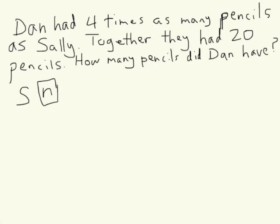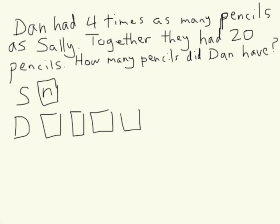Dan had four times as many pencils as Sally, so for Dan, he has four times that. I have to draw four squares, and I don't know how many are in each group, so I'll put an N inside each of the squares.